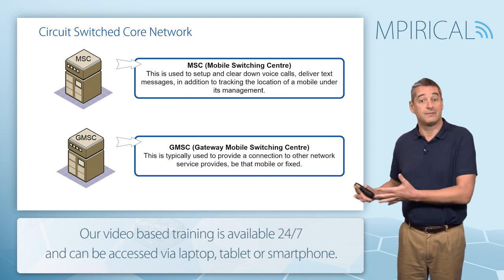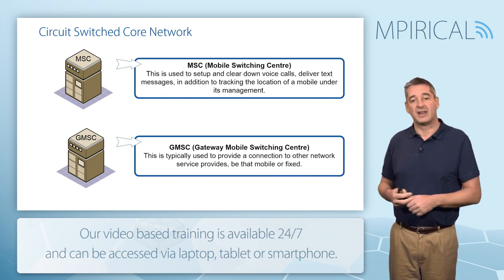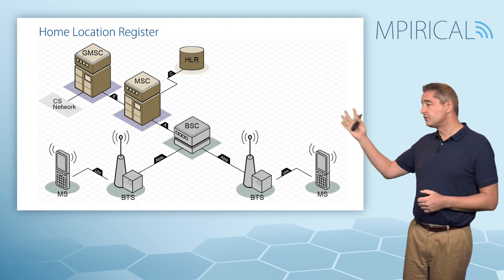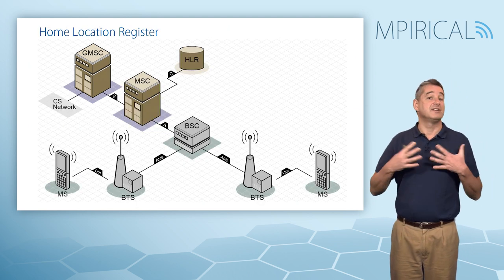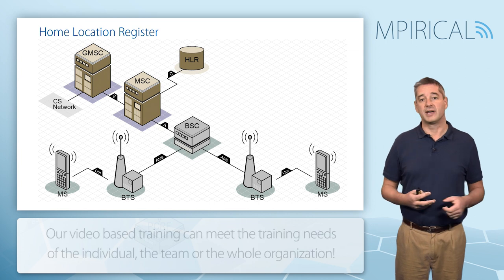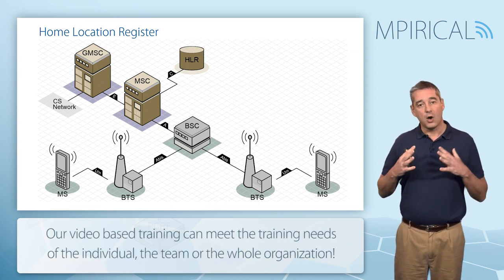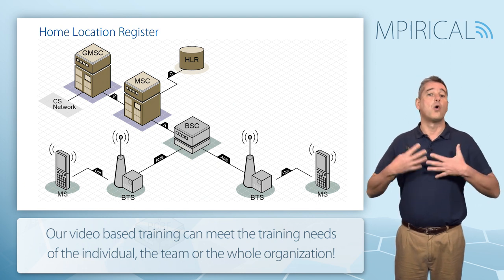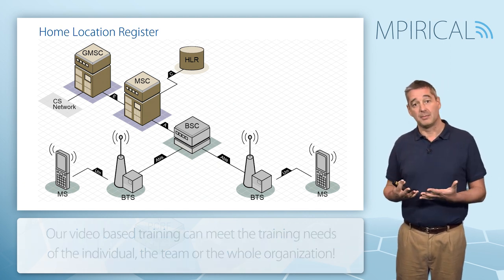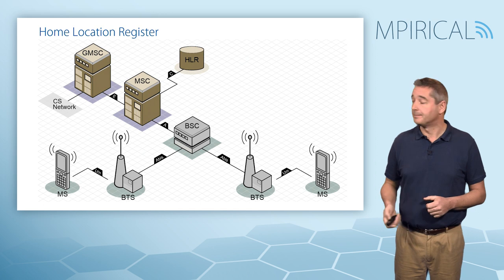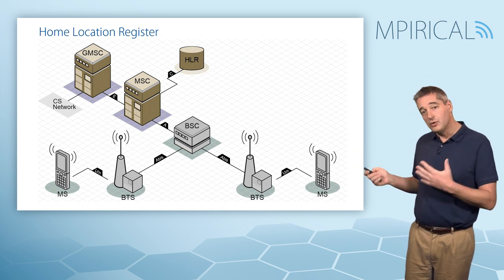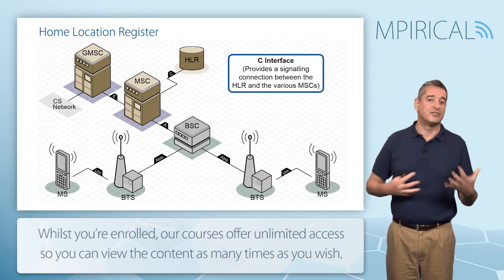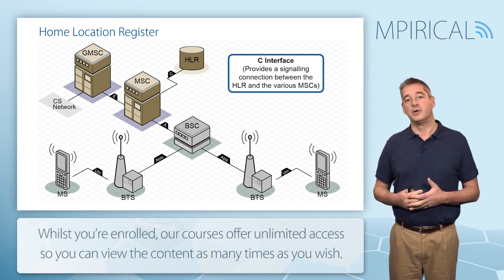At the top of the architecture we have a database termed the Home Location Register. The Home Location Register is one master database which contains all the information about the subscribers who belong to this network. It connects to the MSC via the C interface, which carries signaling information between the two nodes.